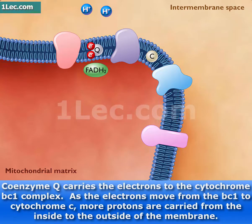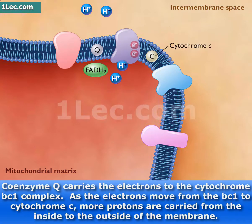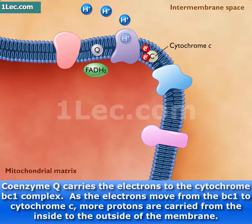Coenzyme Q carries the electrons to the cytochrome BC1 complex. As the electrons move from the BC1 complex to cytochrome C, more protons are carried from the inside to the outside of the membrane.